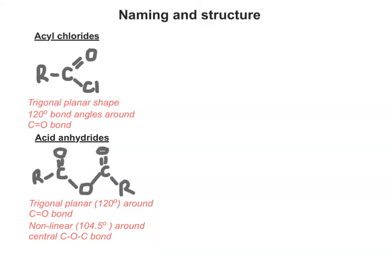Looking at the structures of both of these types of compounds, the trigonal planar shape and the 120-degree bond angle exists around the C=O in both cases. But in the acid anhydrides, the central oxygen that sits between the two carbonyl groups carries a 104.5-degree bond angle.